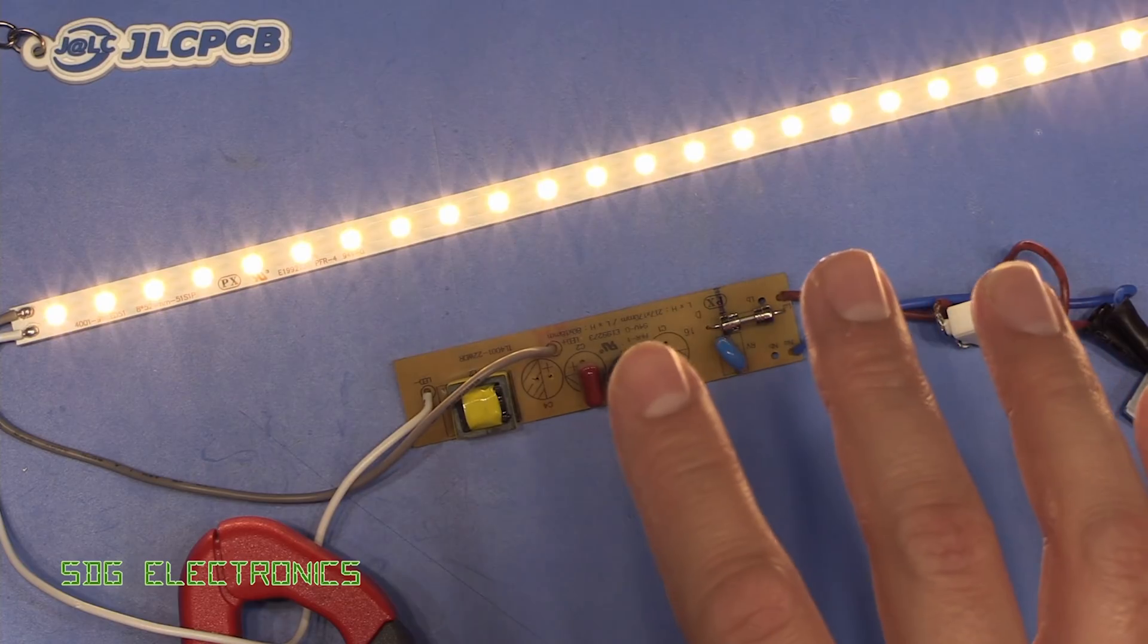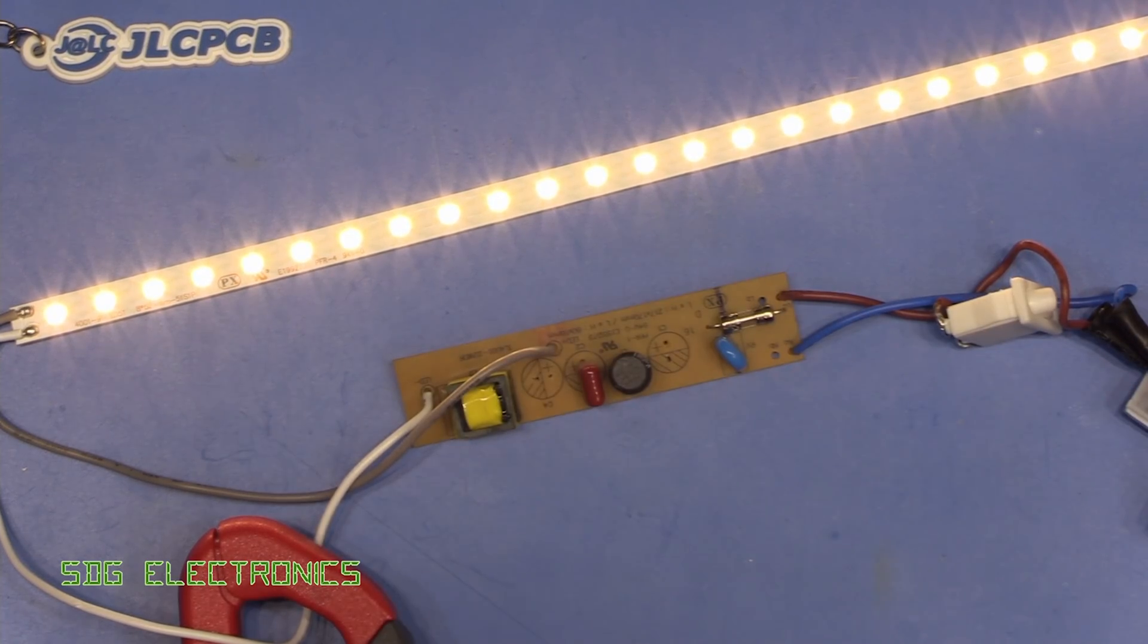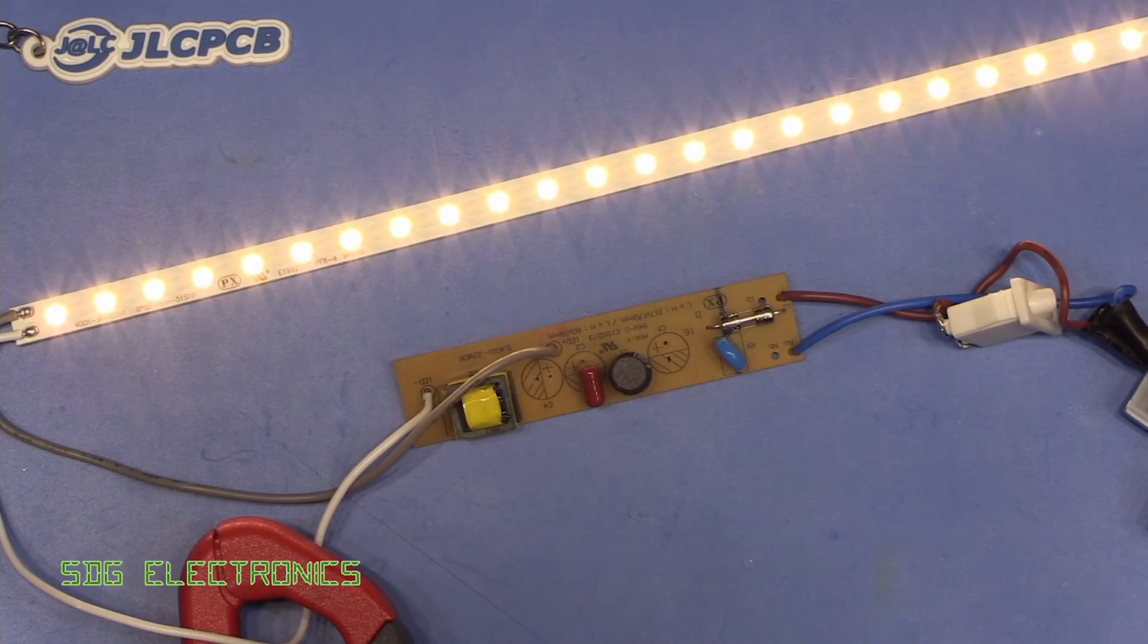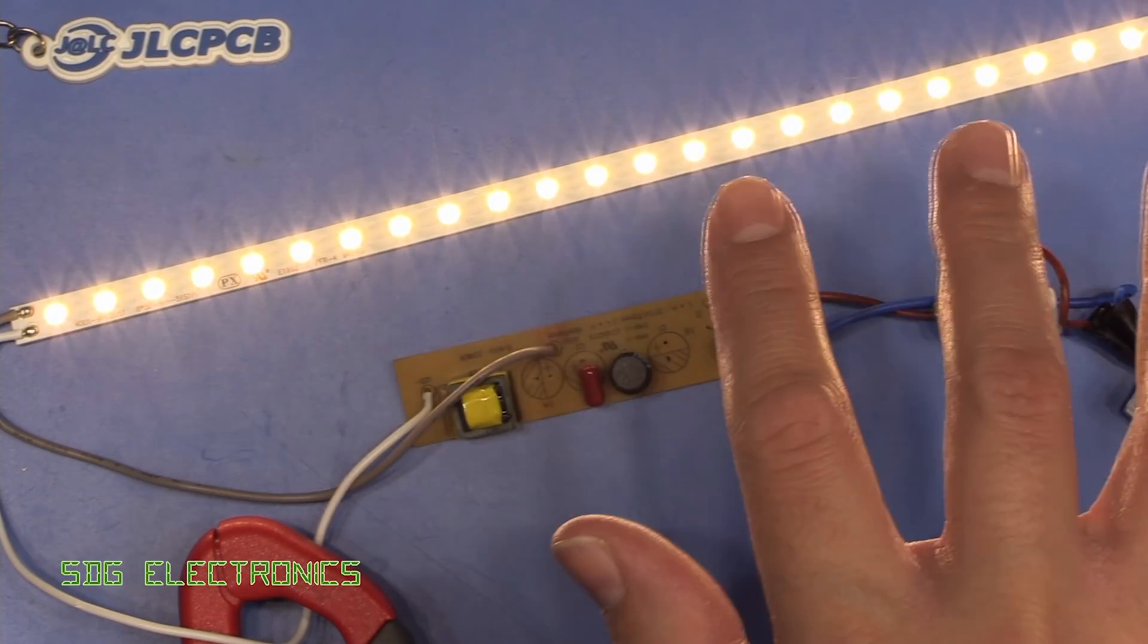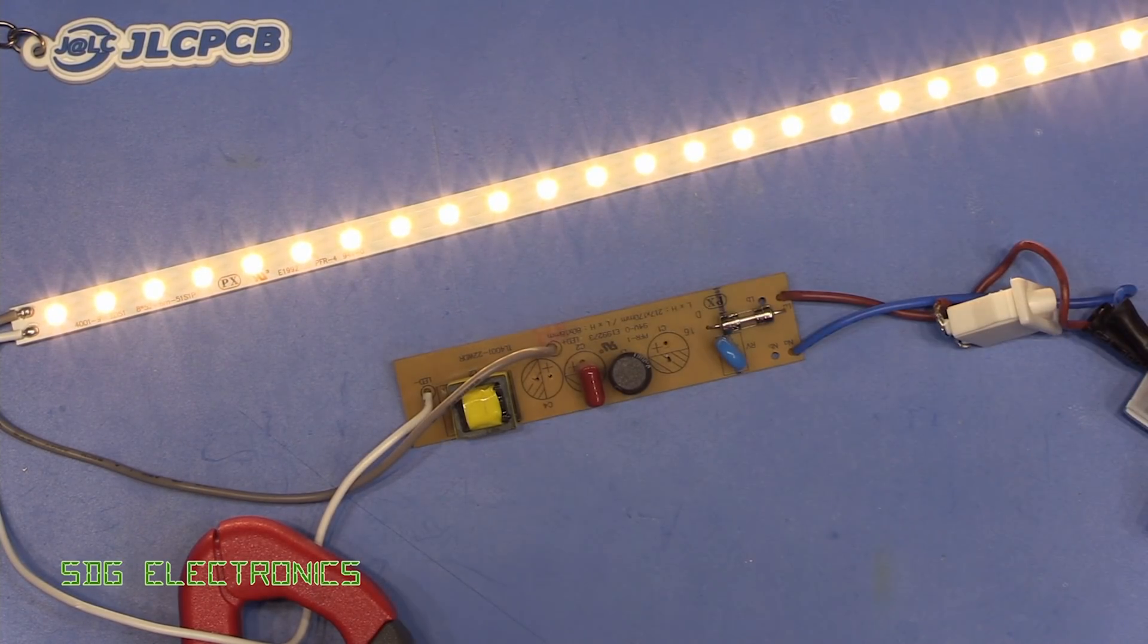And if you look at other videos, I think Julian Ilett had a video ages ago of his LED strip lights in his kitchen. They all failed. And it just seems to be, particularly with white LEDs, you're opening up two different modes of failure.